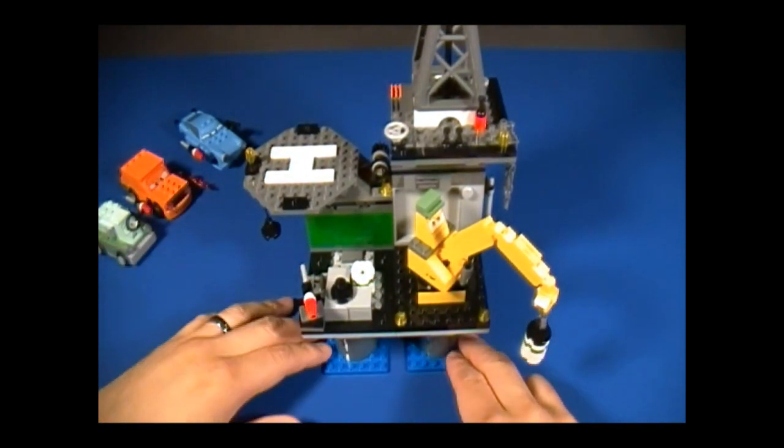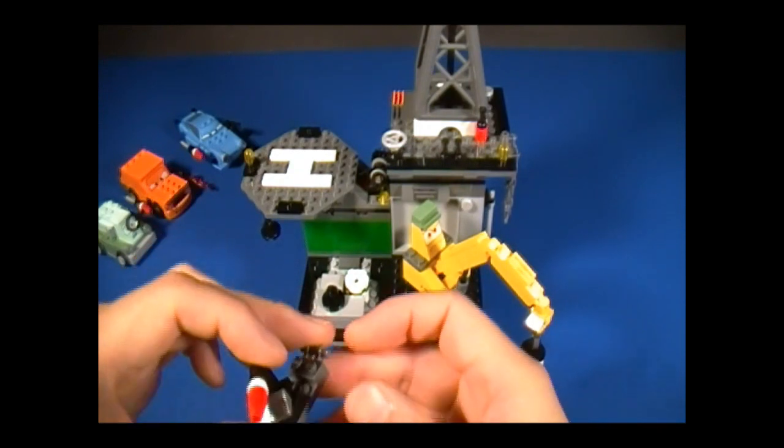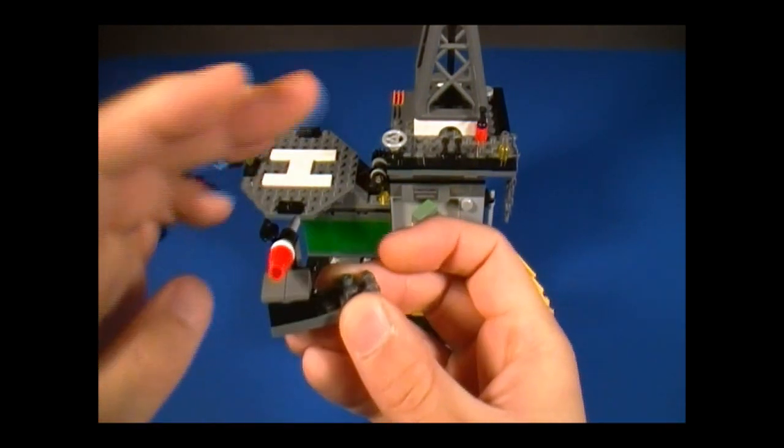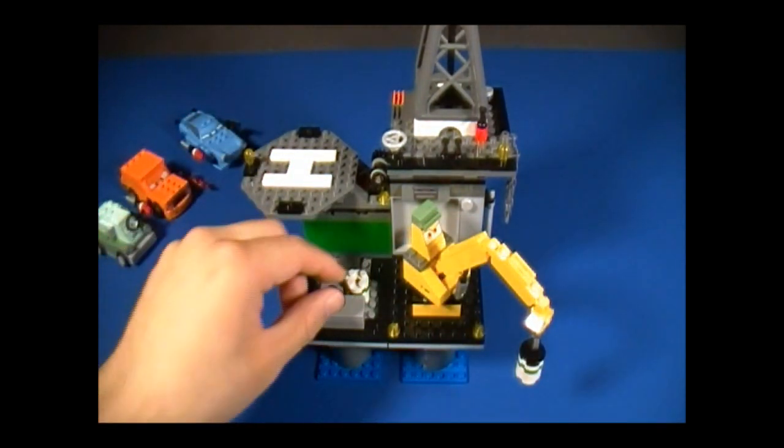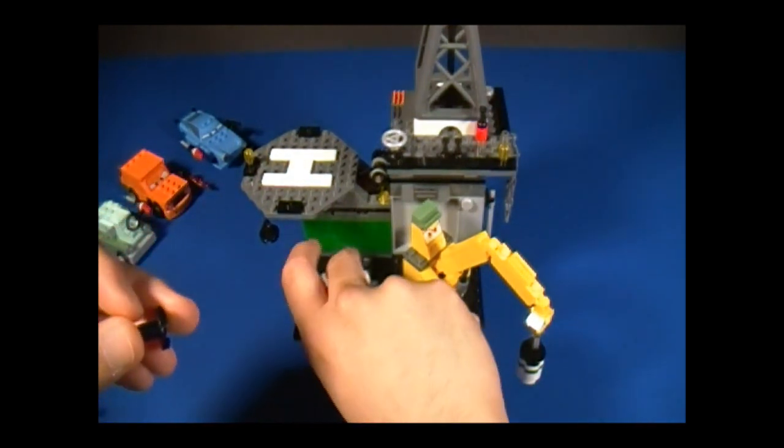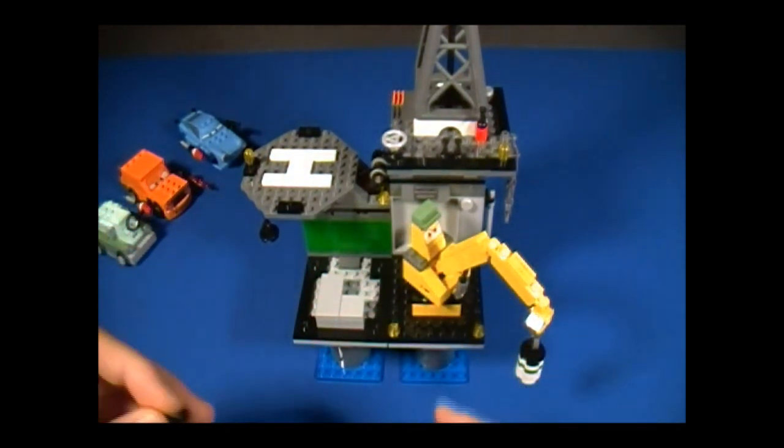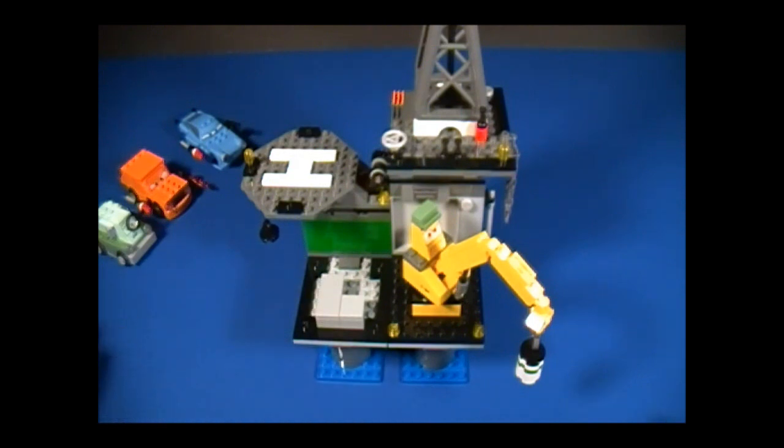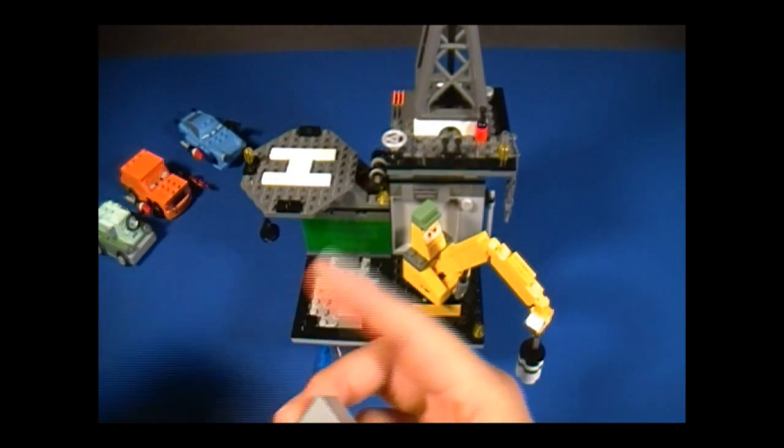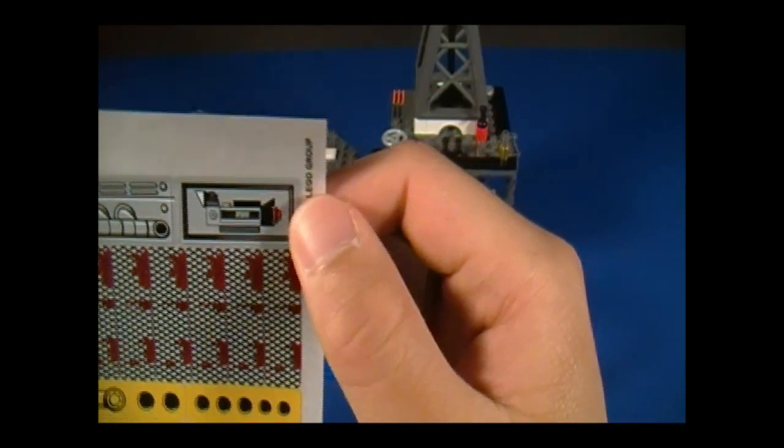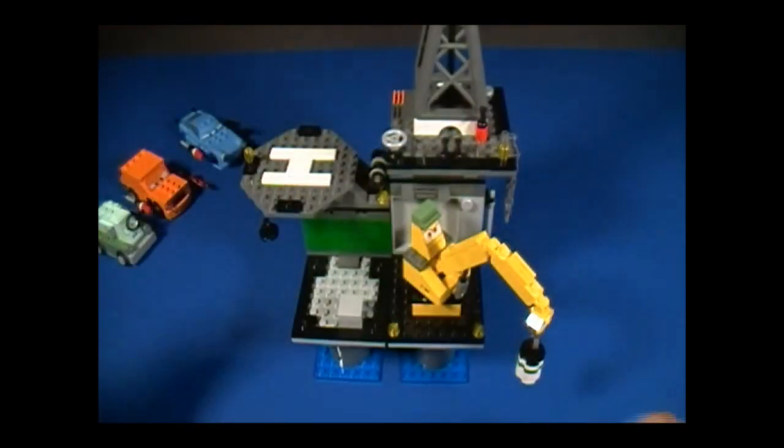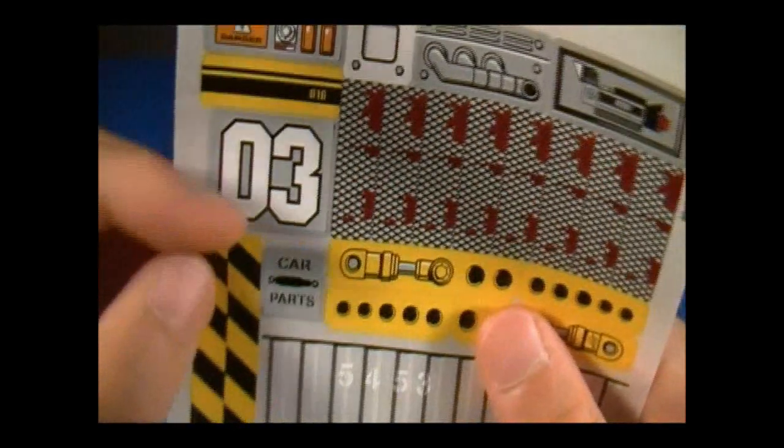These are all the accessories that you get with the playset. We have a portable flick fire missile which can rotate a full 360. We also have this piece which you can use to attach to the fuel canister, so this way the crane can move it around, or you can attach this to the green container. We also have two crates. This one, we got a sticker to go on top, where we have the laser camera. And for the other crate, we have the car parts.